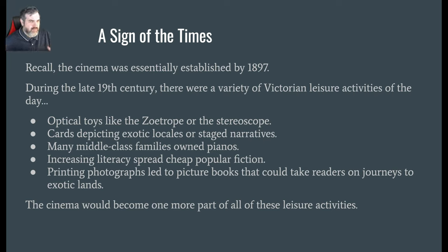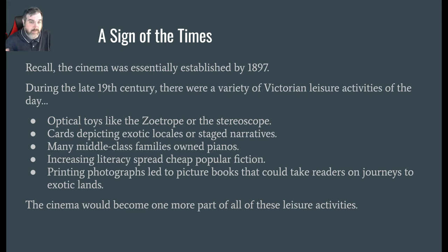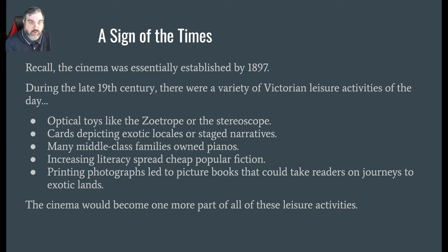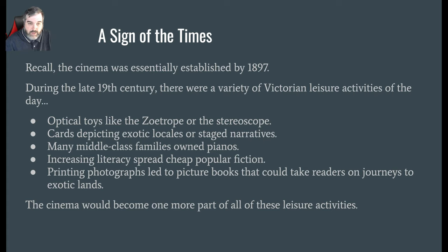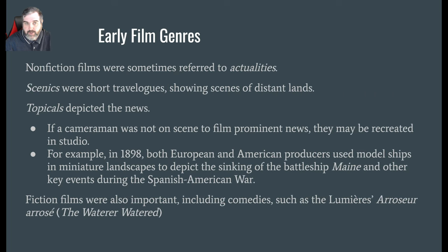Cinema was established pretty clearly by 1897, mid-to-late 1890s. During the late 19th century there were a variety of Victorian leisure activities: optical toys like the zoetrope or the stereoscope, cards showing exotic locales, stage narratives. A lot of middle-class families owned pianos or other musical instruments. Literacy was starting to increase, allowing for more fiction — cheaper popular fiction novels and magazines. Printing photographs led to picture books that could take readers on journeys to exotic lands. Cinema would just be one more nuance among all these different leisure activities.